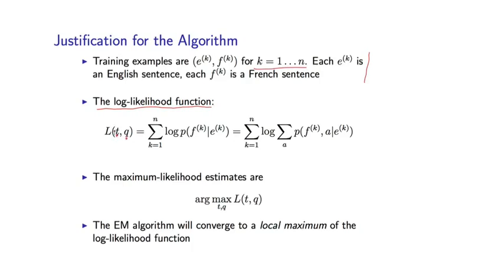And this is basically going to be a measure of how well our parameters fit our training examples. So higher values for L mean that the t and q values do a better job of modeling the training examples we're looking at.